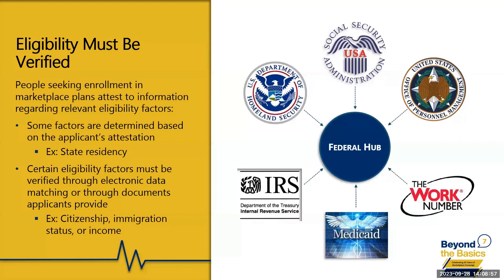On the right-hand side of this page, we have a depiction of what the federal hub is. The federal hub is a mechanism that healthcare.gov and state-based marketplaces use to verify different factors electronically. Trusted data sources include the Social Security Administration, which can verify citizenship for many people, and the IRS, which can verify income attestations. As an individual types information into healthcare.gov, that information is being checked against these systems in real time.